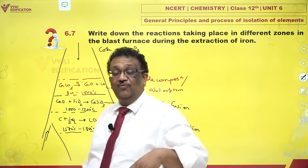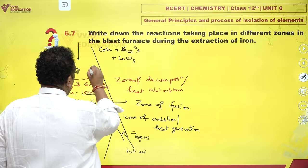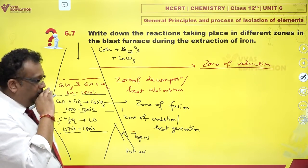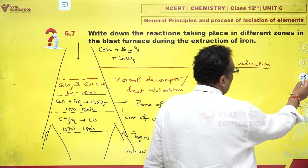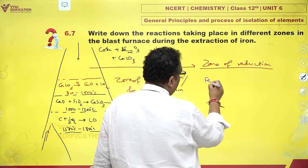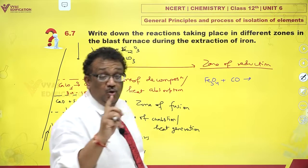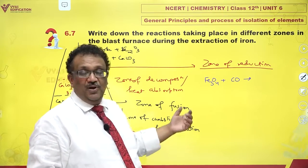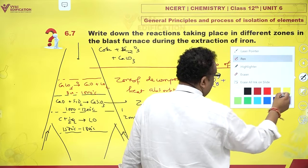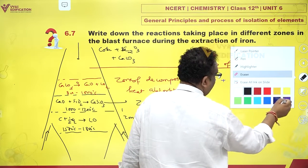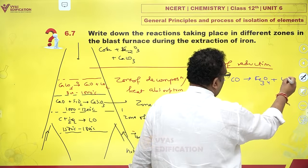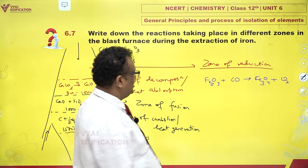The most important zone — the crucial zone for which all this is done — is the uppermost zone of reduction. Reduction happens here; specifically, iron hematite gets reduced. There are three reactions. Carbon monoxide is the principal reducing agent in blast furnace metallurgy of iron. First, Fe₂O₃ is reduced to Fe₃O₄ and CO₂, giving ferrosoferric oxide.